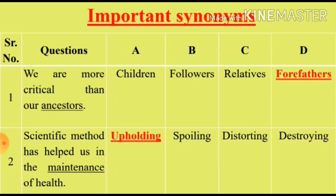Question 1: 'We are more critical than our ancestors.' We will see the synonym for the word 'ancestors'. Option A: Children (Bachche). Option B: Followers (Pairokar). Option C: Relatives (Rishtedar). Option D: Forefathers (Abaujdat). Options A and B are irrelevant. We will select from Option C and D.